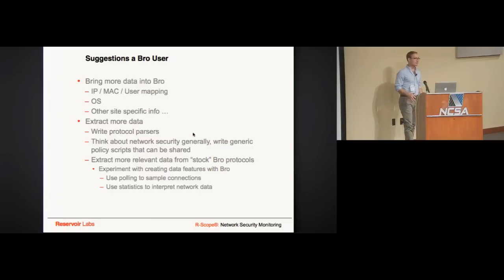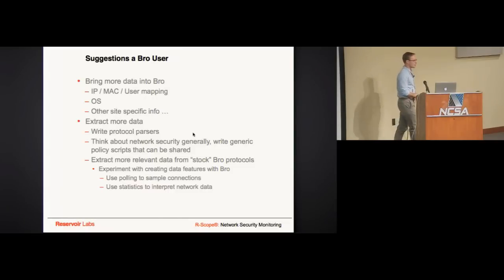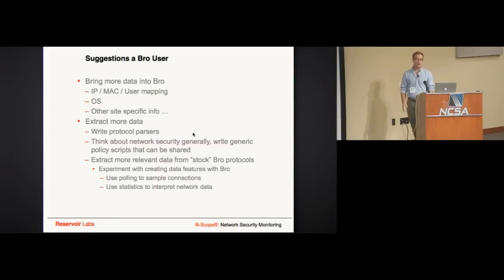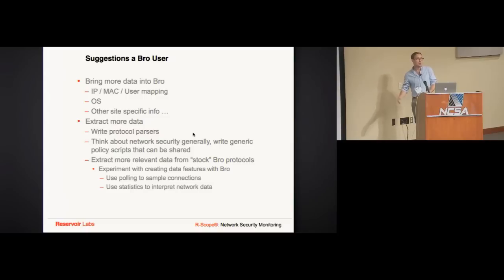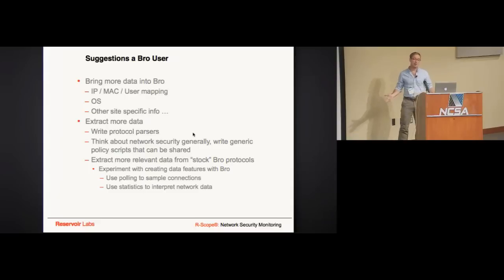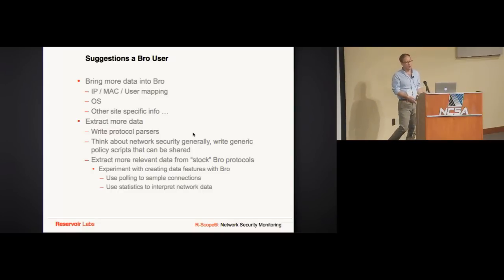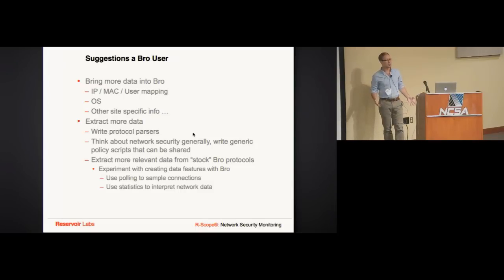I've been talking to people who are just starting to use Bro and they ask, 'What do I do with this programming language? The data is great but I don't know what to do beyond that.' So I have some suggestions. One is to bring more data into Bro — make Bro work for you. Bring in IP-to-MAC user mappings. If you can get that data from somewhere, do it. The RADIUS analyzer and DHCP analyzer are very helpful for this. Knowing what OS is being used on the network is really useful.